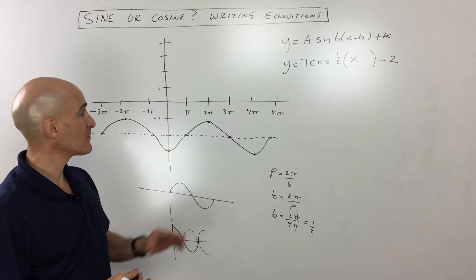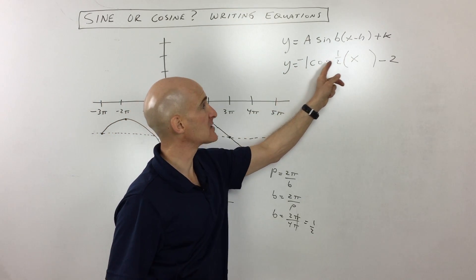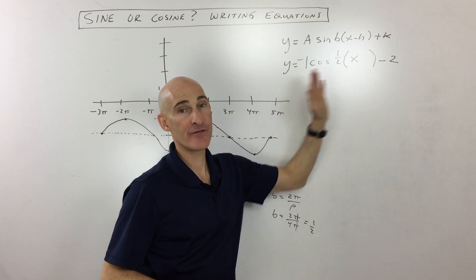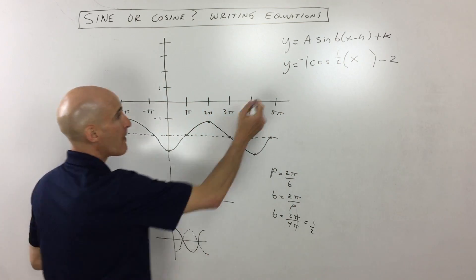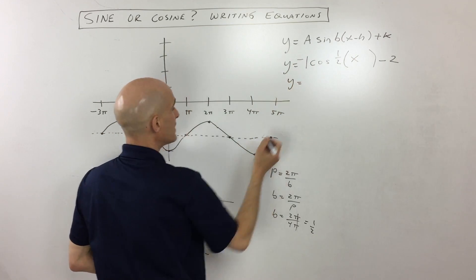The only thing that's differing between all these equations we're going to be writing is the A value, whether it's positive or negative, and the phase shift, which is the left and right, the horizontal shift. So that's one possible answer here.